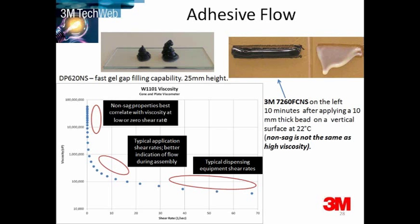At low shear, the viscosity will be high; at high shear, the viscosity will fall. When we apply a shear rate during dispensing, the viscosity will fall markedly and good flow will be observed. The ideal behavior is demonstrated by the 7260 adhesive.